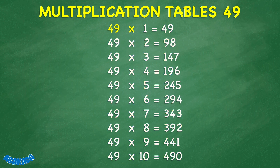49 times 1 equals 49. 49 times 2 equals 98. 49 times 3 equals 147. 49 times 4 equals 196. 49 times 5 equals 245. 49 times 6 equals 294.